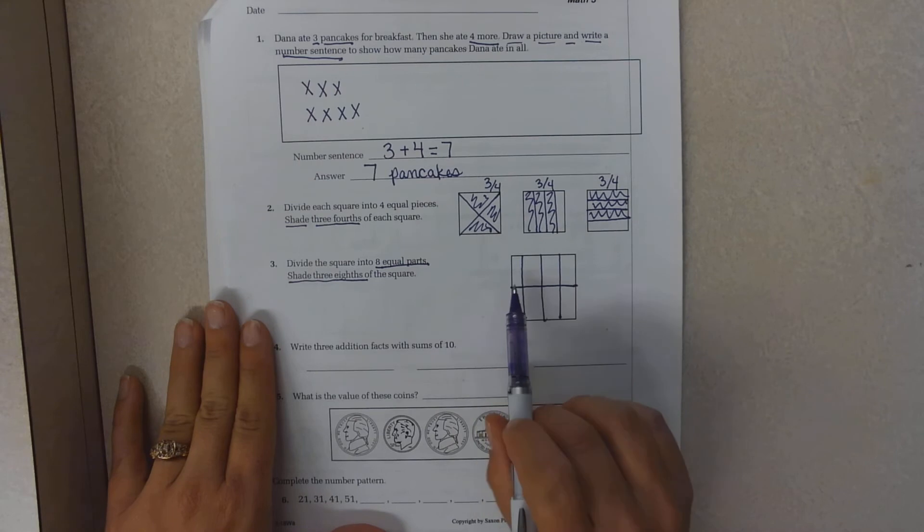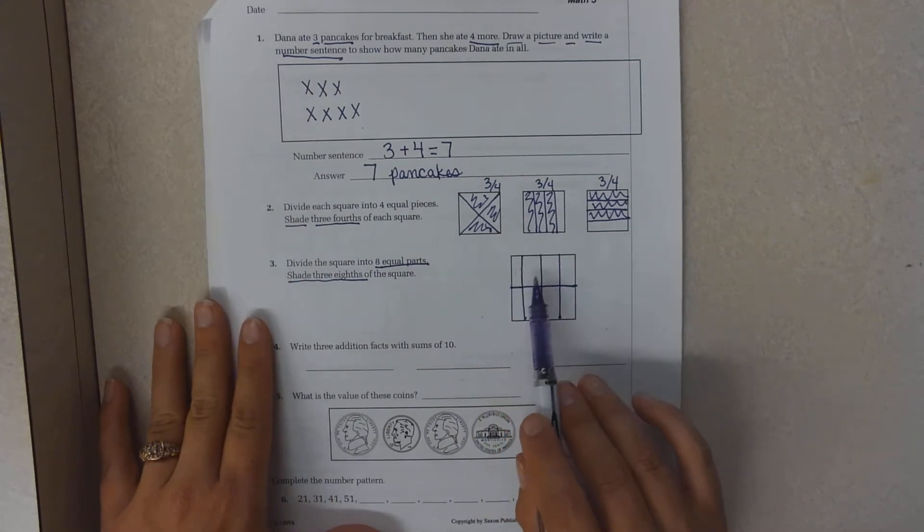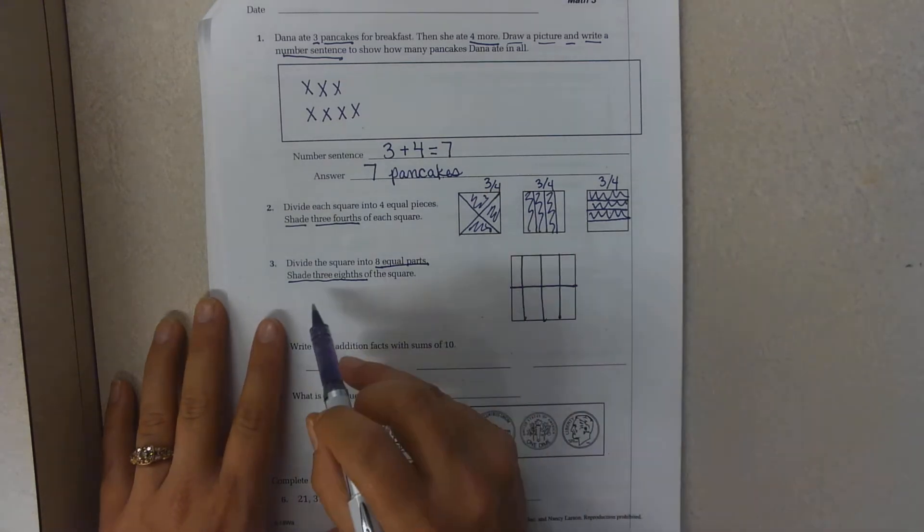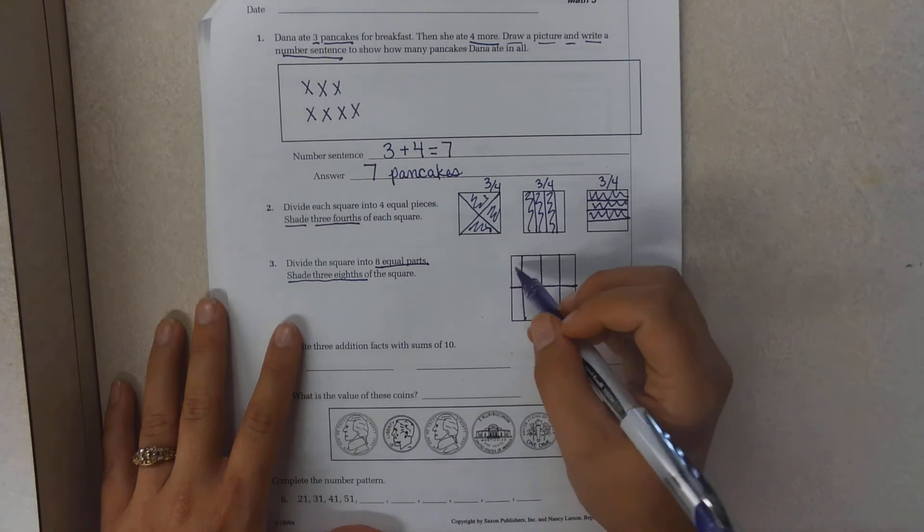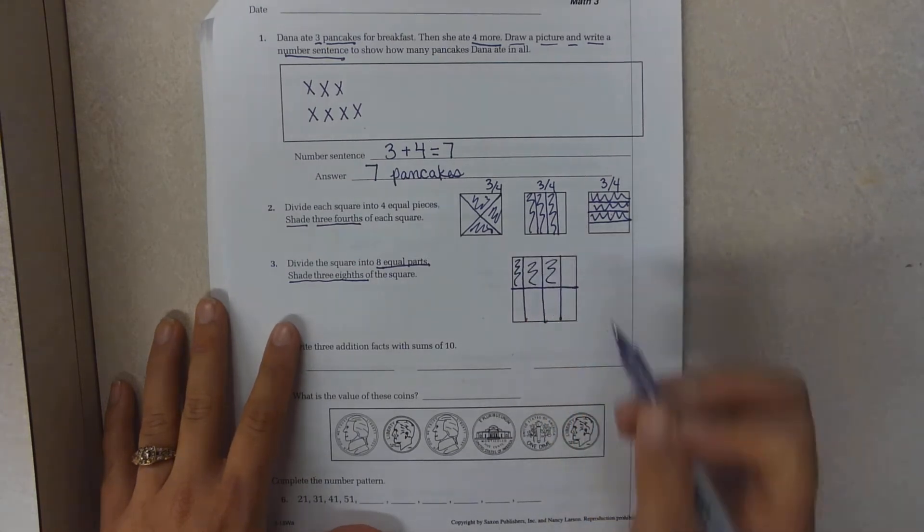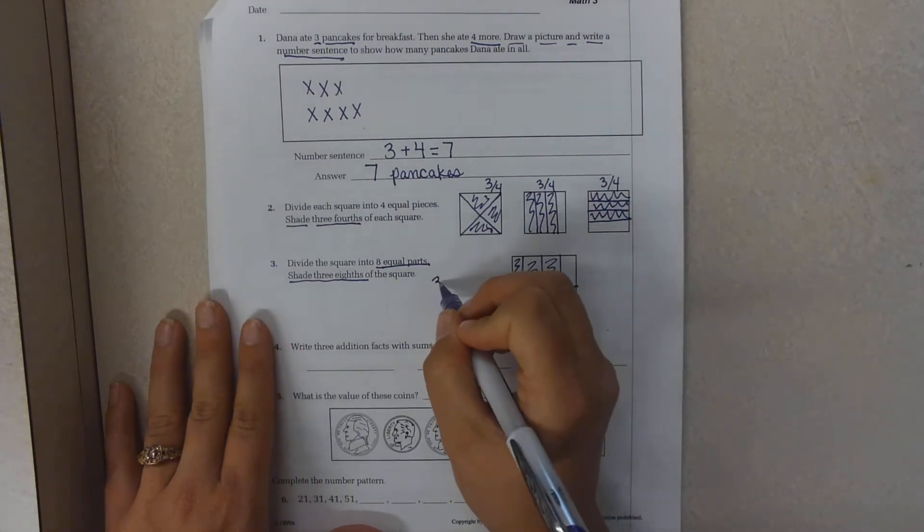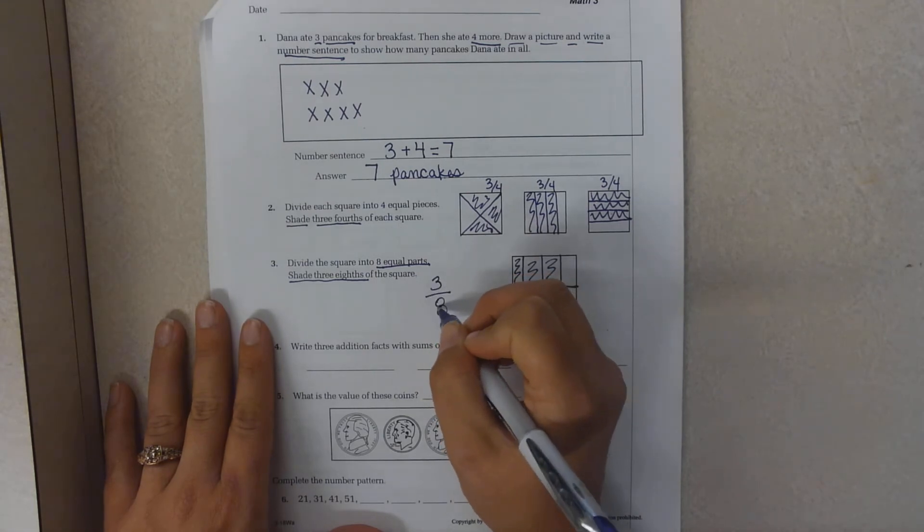Now, of course, I'm not perfect. So my drawing is not perfect. But ideally, these would be more evenly spaced. And I'm going to color in or shade three out of eight. And so that looks like three eighths.